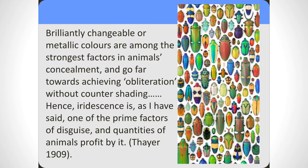In his book — which includes his painting 'Peacock in the Woods' — Thayer suggested that the peacock produces its tail not just for sexual display, but actually as a form of camouflage. He states: 'brilliantly changeable or metallic colours are among the strongest factors in an animal's concealment, and go far towards achieving obliteration without countershading. Hence, iridescence is one of the prime factors of disguise and quantities of animals profit by it.' So he is suggesting that structural colour and iridescence can actually be a form of camouflage — a counterintuitive idea since iridescence is usually vivid and bright.